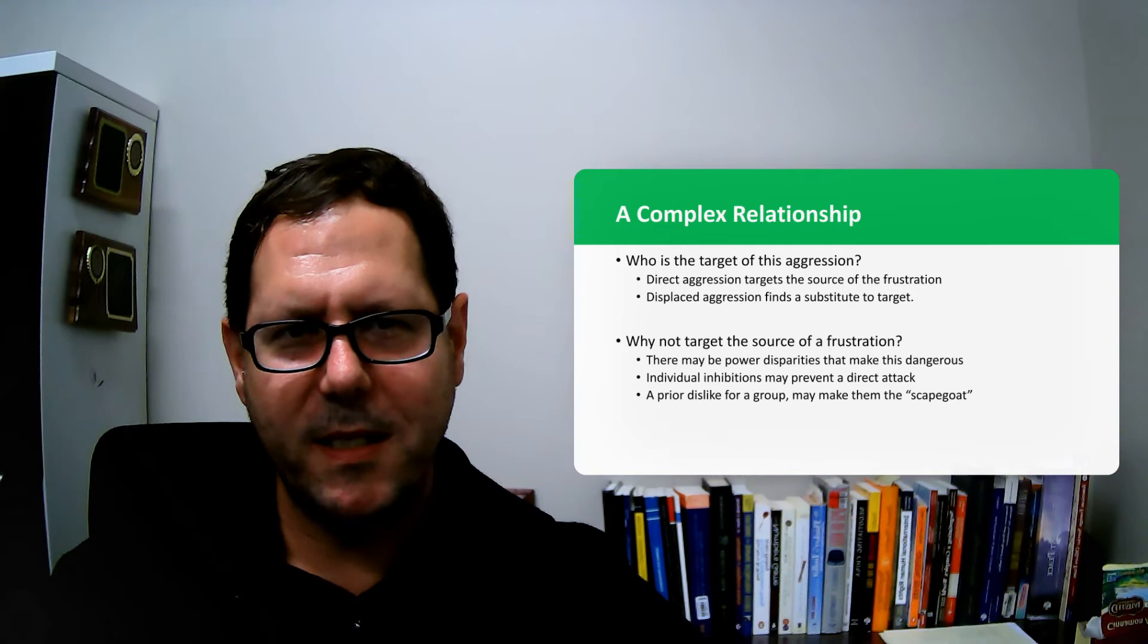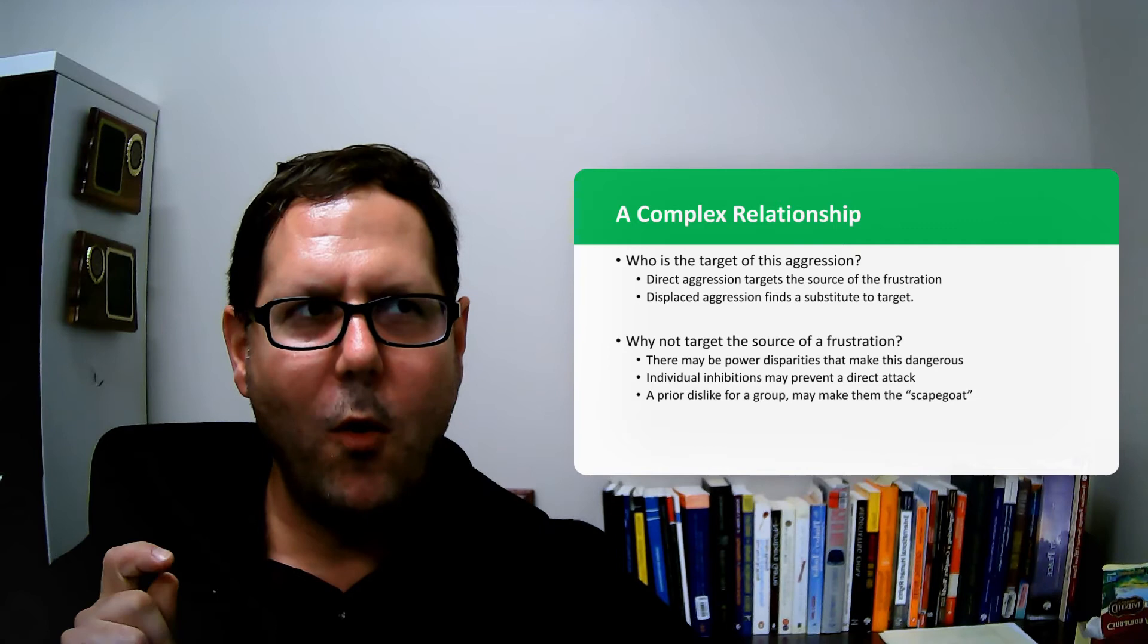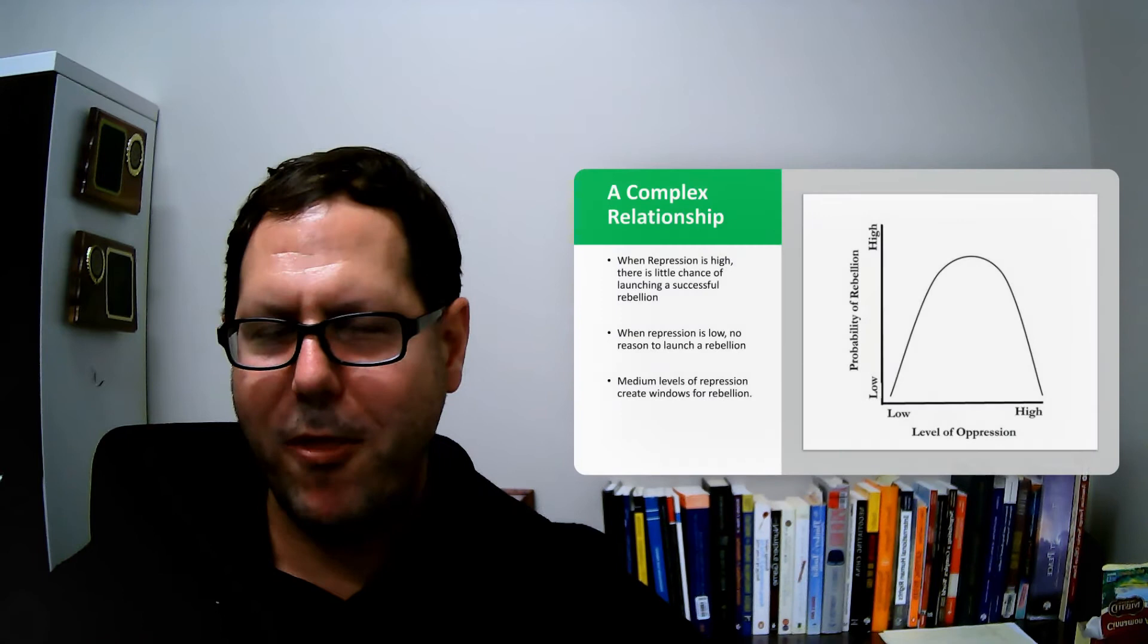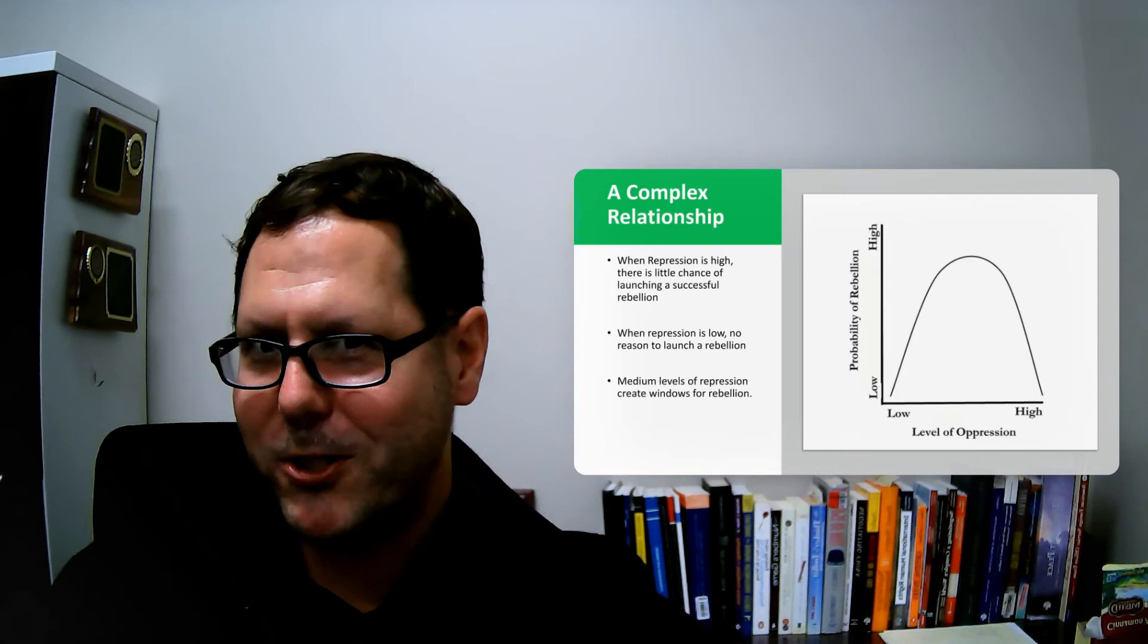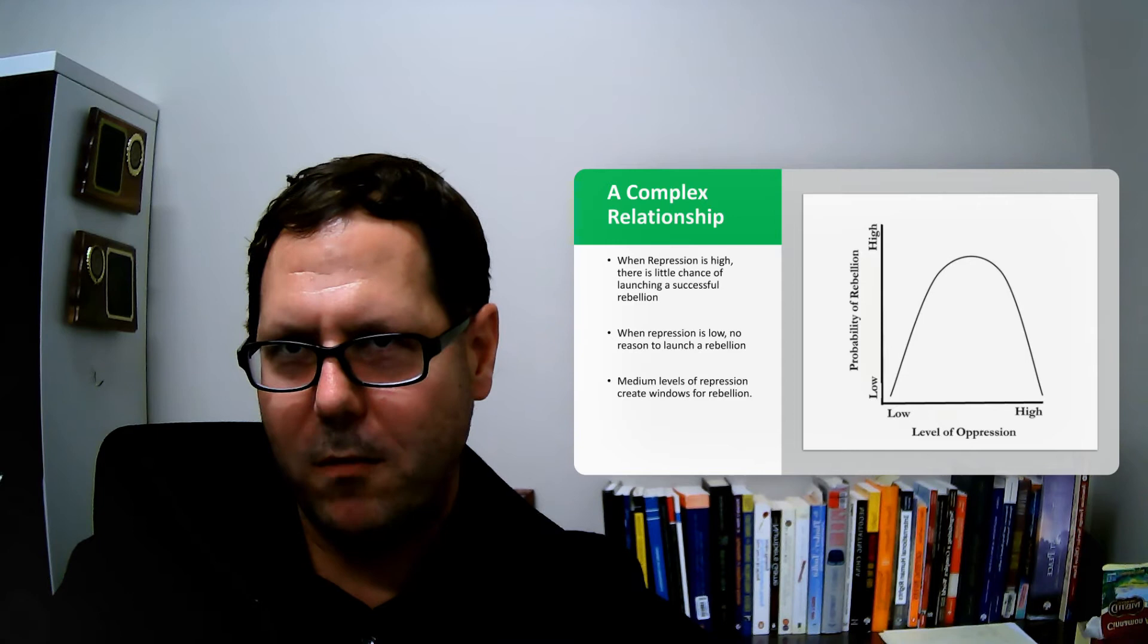Maybe that helps us get at it, but it raises this really interesting question about where it's safe to lash out. Once we start thinking about where it's safe to lash out, we get the sense that maybe there's this curvilinear relationship between the level of oppression that exists within a state and the level of violence or rebellion you're likely to see.